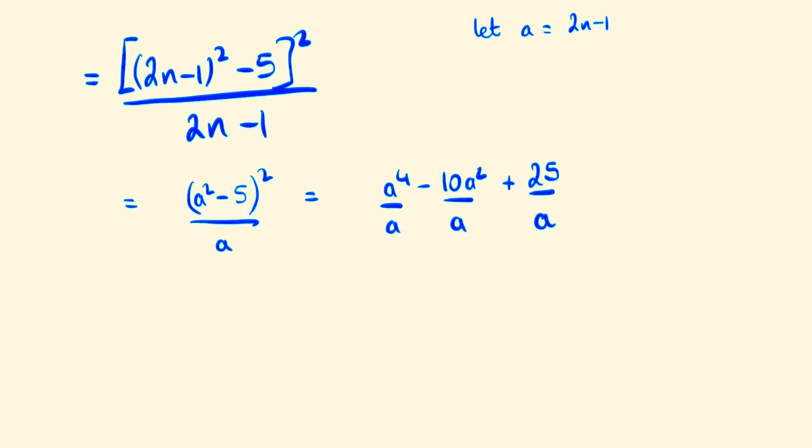What's important to realize is that we're saying n is an integer and since n is an integer we must choose a to also be an integer and therefore this can be written as a cubed minus 10a plus 25 over a.